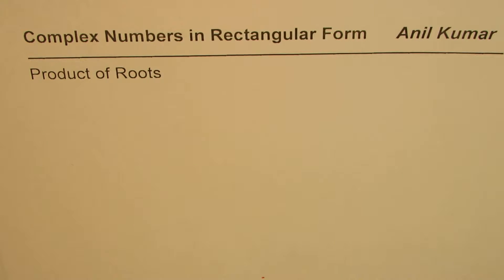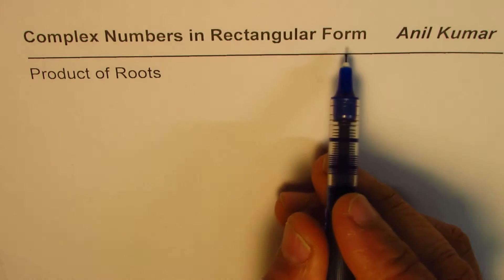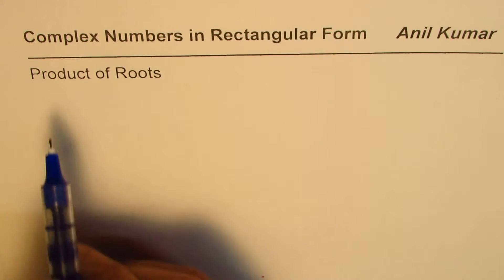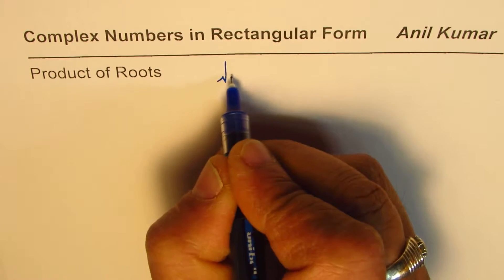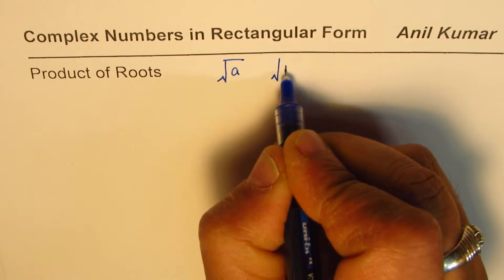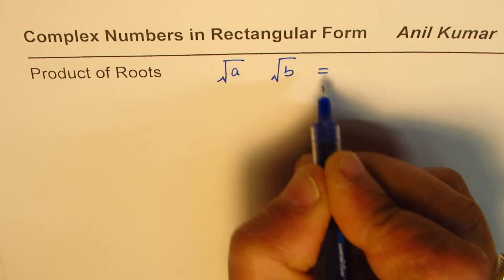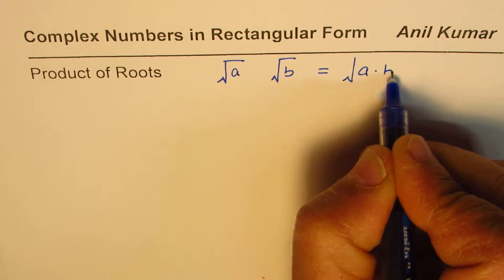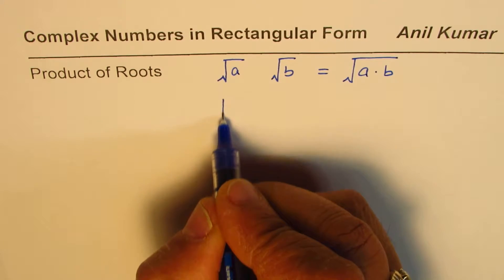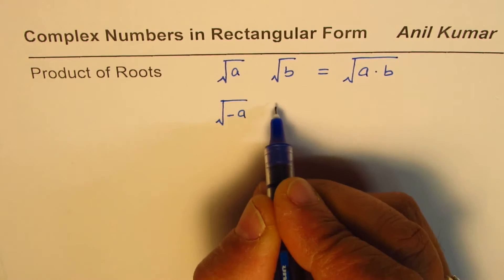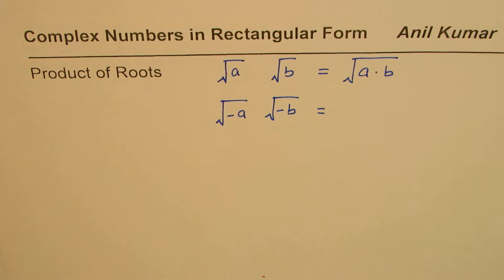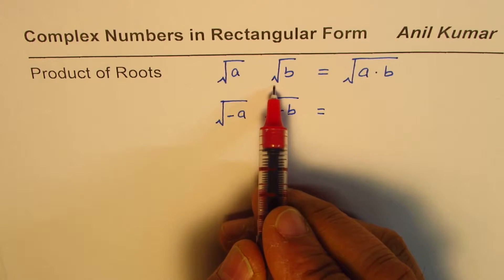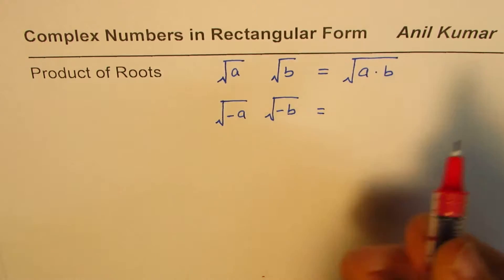I'm Anil Kumar. We are exploring complex numbers in rectangular form. In this video we will discuss how to find the product of roots. You know if you have square root of a times square root of b, you could always write this as square root of a times b. Remember, square root of a times square root of b equals square root of a·b — this is correct for real numbers.